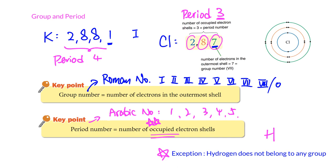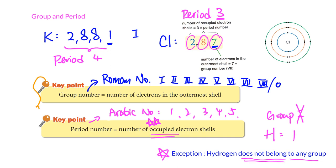There is an important exception for hydrogen. Hydrogen has one electron, so its electronic configuration is 1, but it does not belong to Group I. Elements in the same group should have similar chemical properties, but hydrogen is a non-metal while Group I elements are metals — their properties are totally different. Therefore, hydrogen does not belong to any group. Remember: group number is the number of electrons in the outermost shell, and period number is the number of occupied electron shells. Note the spelling: outermost, not outmost.